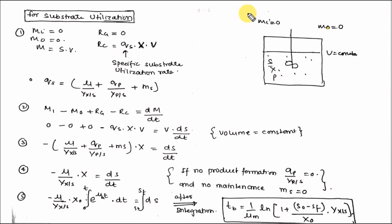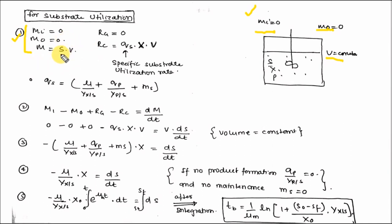Now let's discuss substrate utilization in a batch reactor. As before, there is no output and no input, so Mi is 0, Mo is 0, and volume is constant. The first step: Mi and Mo are 0; M equals S times V (substrate concentration times total volume). Substrate generation is 0 because there is no generation of substrate — only consumption. The rate of consumption Rc equals Qs (specific substrate utilization rate) times X (biomass) times volume.